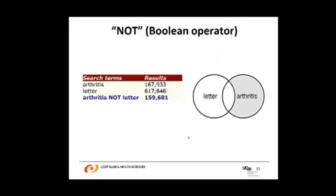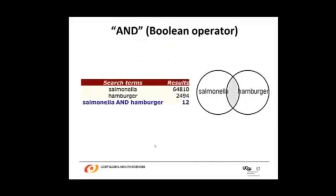Next is NOT. This means, for example, if you entered ARTHRITIS NOT LETTER, it will include every article with the word ARTHRITIS except the ones with the word LETTER. That means you want to include everything with the word ARTHRITIS, but you don't want any articles with both ARTHRITIS AND LETTER.